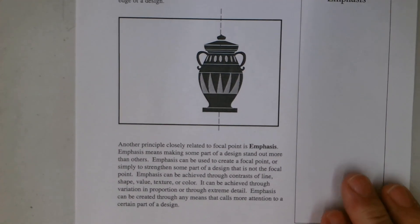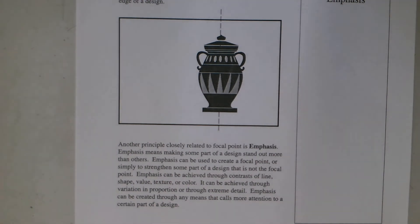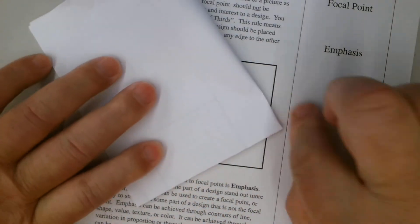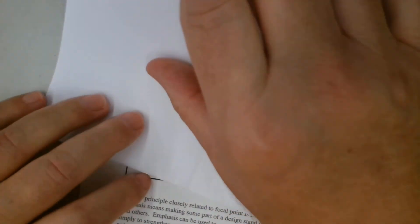Another principle closely related to the focal point is emphasis. Emphasis means making some part of the design stand out more than others. Emphasis can be used to create a focal point or simply to strengthen some part of the design that is not the focal point. Emphasis can be achieved through contrast of line, shape, value, texture, and color. It can be achieved through variation in proportion, through extreme detail. Emphasis can be created through any means that calls more attention to a certain part. If there were other vases in here, let's use this page here for a real quick demonstration. We want you again to fold your paper in half, then fold that half in half because we want to have four areas for you to practice these ideas in.